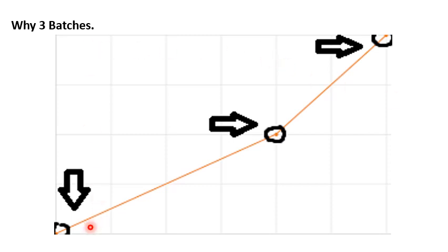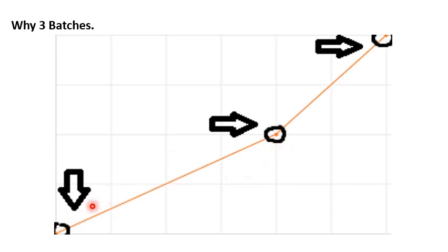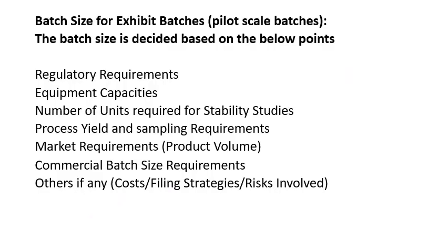To illustrate: if you make one batch, then a second, and both meet requirements, there is just a straight line between the two points — that line can be drawn from any points and you cannot show variation. But as soon as you make the third batch, you can measure the variation and show similarities. With 3 batches you can show differences, variations, similarities, and demonstrate reproducibility. That's why 3 batches are required.